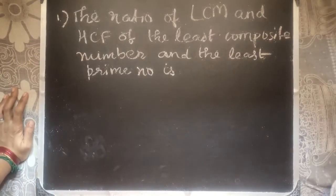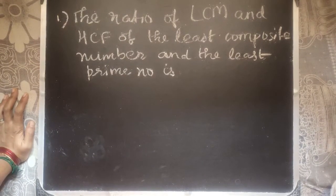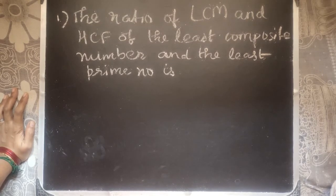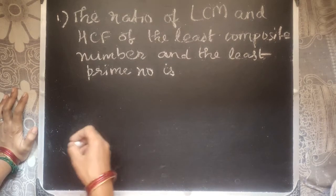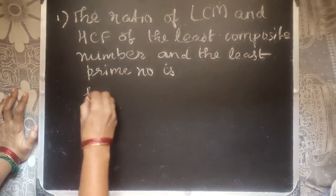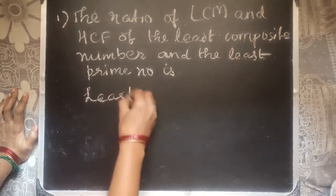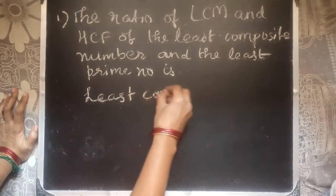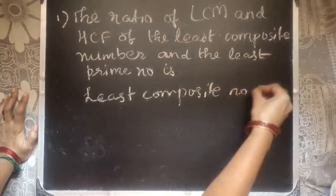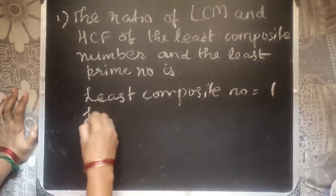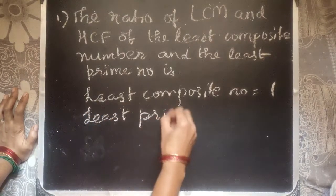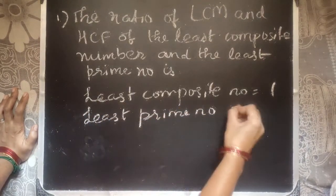The first question: the ratio of the LCM and the HCF of the least composite number and the least prime number is — for that, first we need to find the least composite number. The least composite number is 4 and the least prime number is 2.